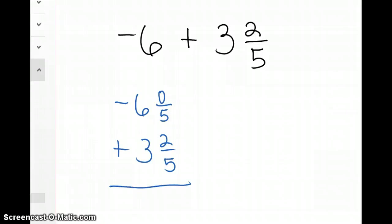So what I'm going to do is borrow one whole from my negative 6 and it becomes negative 5. And I'm going to take that one whole and add it here.